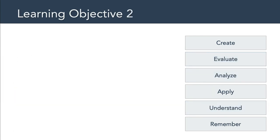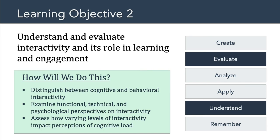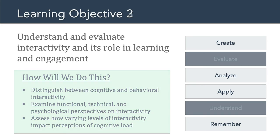Our second learning objective states that we will understand and evaluate interactivity and its role in learning and engagement. We're going to distinguish between cognitive and behavioral interactions, we'll examine functional, technical, and psychological definitions of interactivity, and we'll assess how varying levels of interactivity impact perceptions of cognitive load.